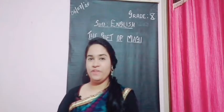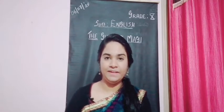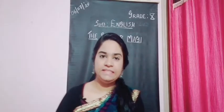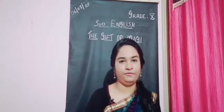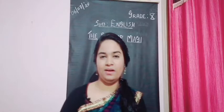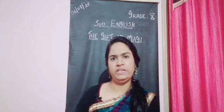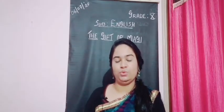Good evening, children. Here we are back with our classes. Last class was on our periodic table, which we completed. I hope you have revised it. Now let's continue with the English chapter — 'The Gift of the Magi.' I know it's quite long. Let me give you a few sentences to help you recall what we've already covered in the story.